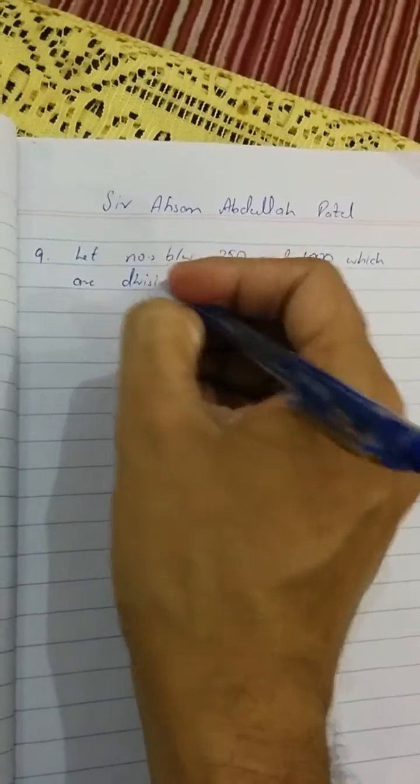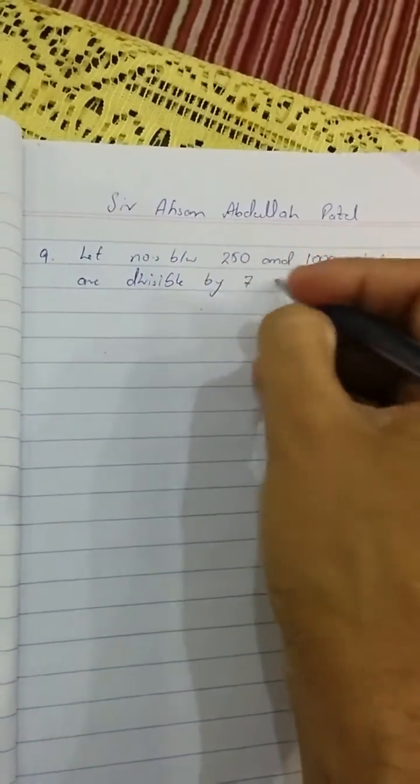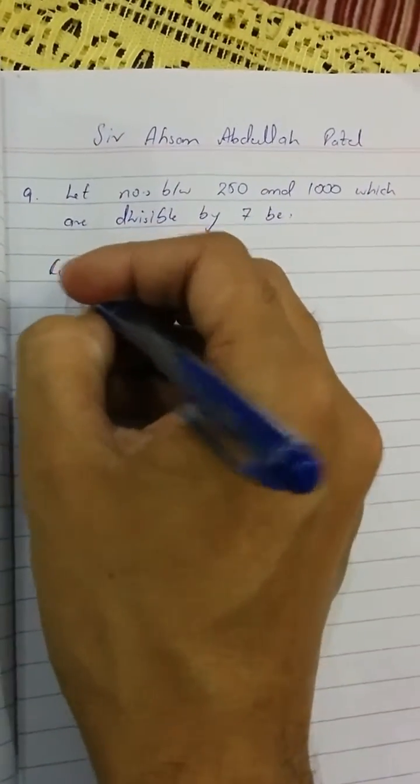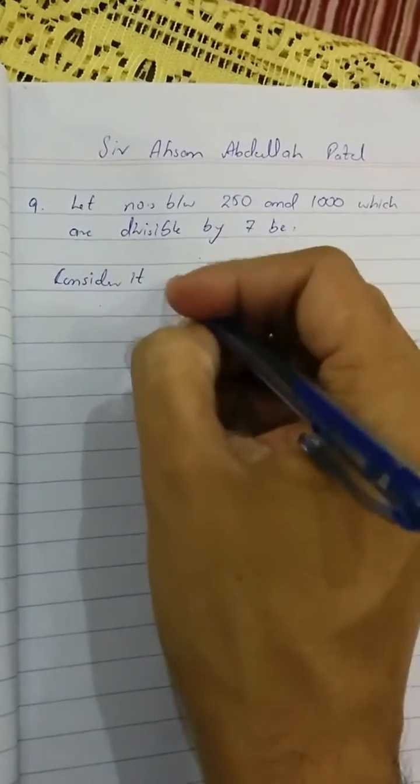...be divisible by 7. We will consider this as an AP (Arithmetic Progression).